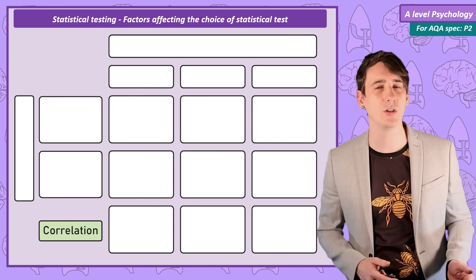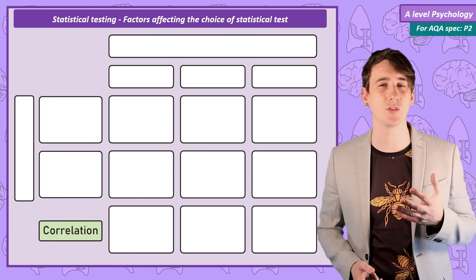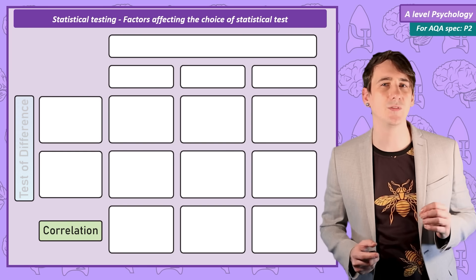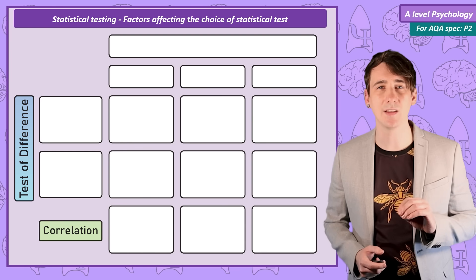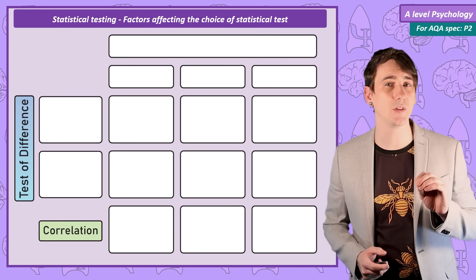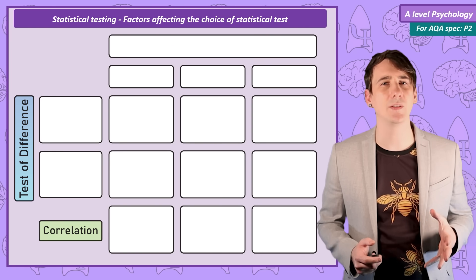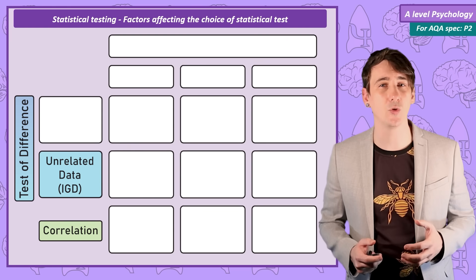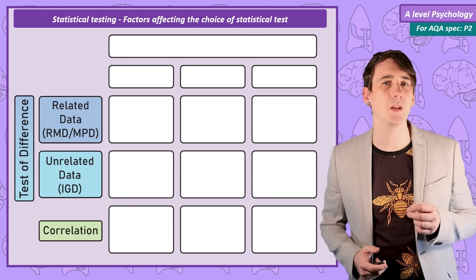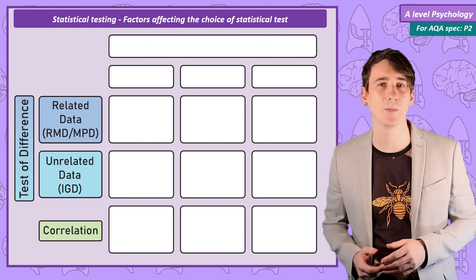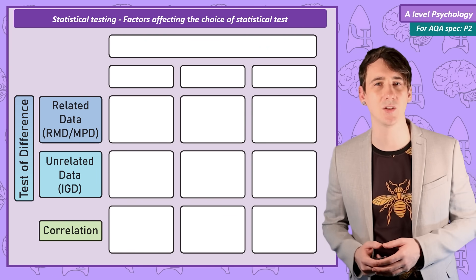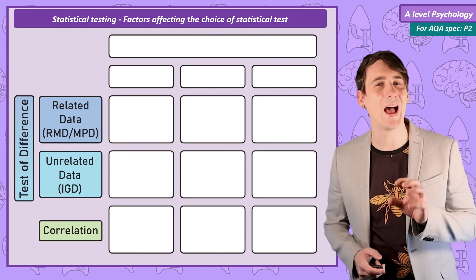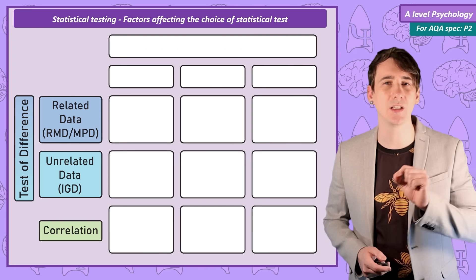First, figure out if the study is a correlation or a test of difference. A correlation is when the researcher just measures two co-variables and looks for a relationship — look for words like correlation, relationship, or association in the stem. A test of difference simply means an experiment, where the researcher tests for a difference in the dependent variable by manipulating the independent variable. Data from independent groups design is called independent data; data from repeated measures design is called related data. Matched pairs data is also treated as related data, as each data point in one condition has a matched data point in the other.